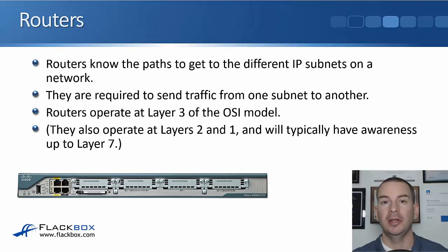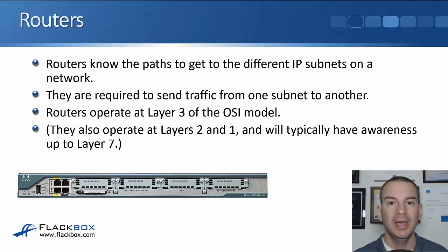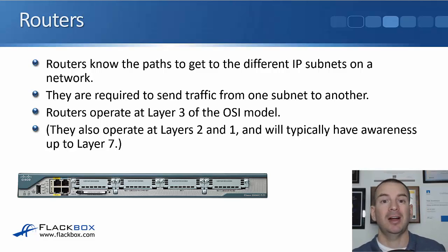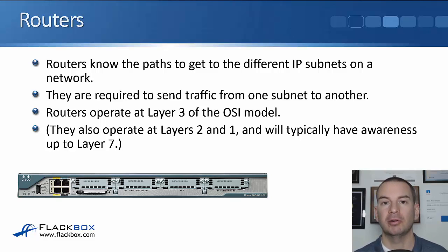IP is at layer 3 of the OSI stack, so a router operates at layer 3 of the OSI model. Obviously it has physical interfaces, so it's also operating at layer 1. It also needs to understand layer 2 addresses, so it operates at layer 2 as well. Routers will normally be aware up to layer 7 for advanced functions, but when they're doing the job of routing between different IP subnets, they're operating at layer 3, so routers are termed as a layer 3 device.